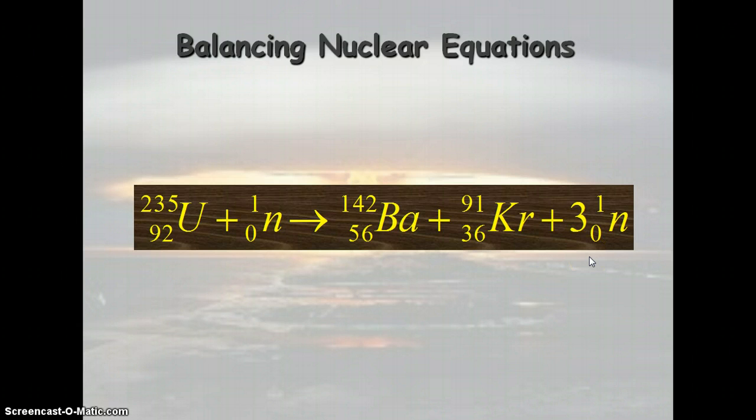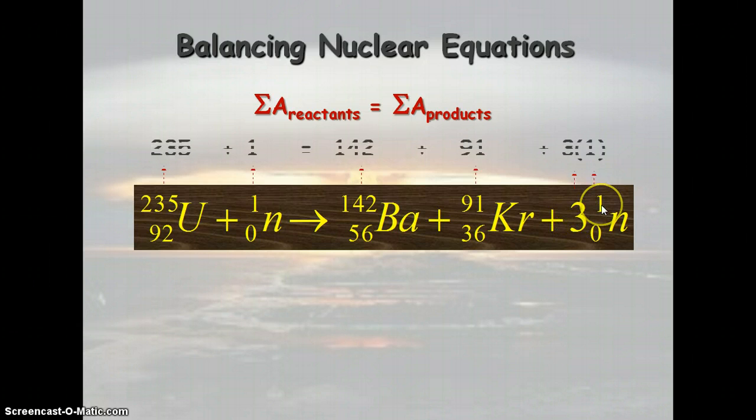So the way this all works is everything on the top must be equal on each side of your yield sign. So 235 plus 1 must be equal to 142 plus 91 plus 3 times 1.